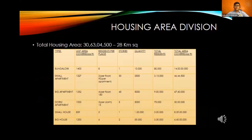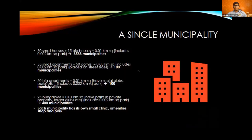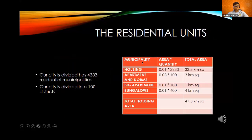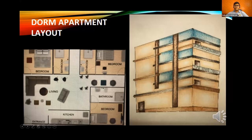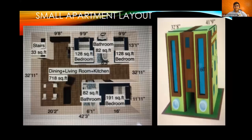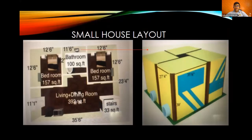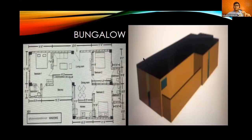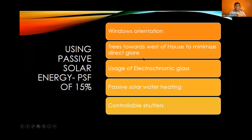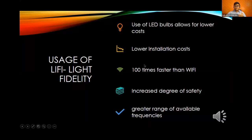The housing area division features six types of housing because we want to accommodate all types of lifestyles. These housings are divided into municipalities which promote local governance and a sense of community. All area allocation for residential units was designed on floor planner to make our houses very attractive and comfortable. We will also use passive solar energy in our houses, which will accommodate 15% of the energy — something other groups didn't do. We will also use Li-Fi instead of Wi-Fi, which saves energy and is much faster.